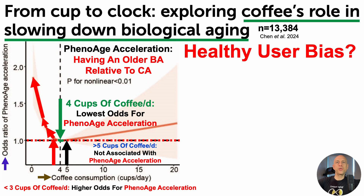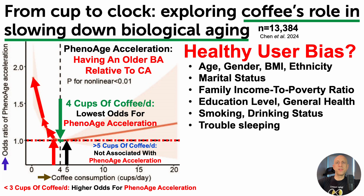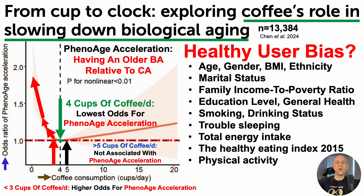But is this just healthy user bias? To potentially account for that, this model was adjusted for standard variables that could impact the association for phenowage acceleration with coffee consumption — age, gender, BMI, and so on. The ones I care most about are diet and physical activity, which would really account for healthy user bias. This study included those adjustments, including total energy intake or calorie intake, the Healthy Eating Index 2015 for diet quality, and physical activity.